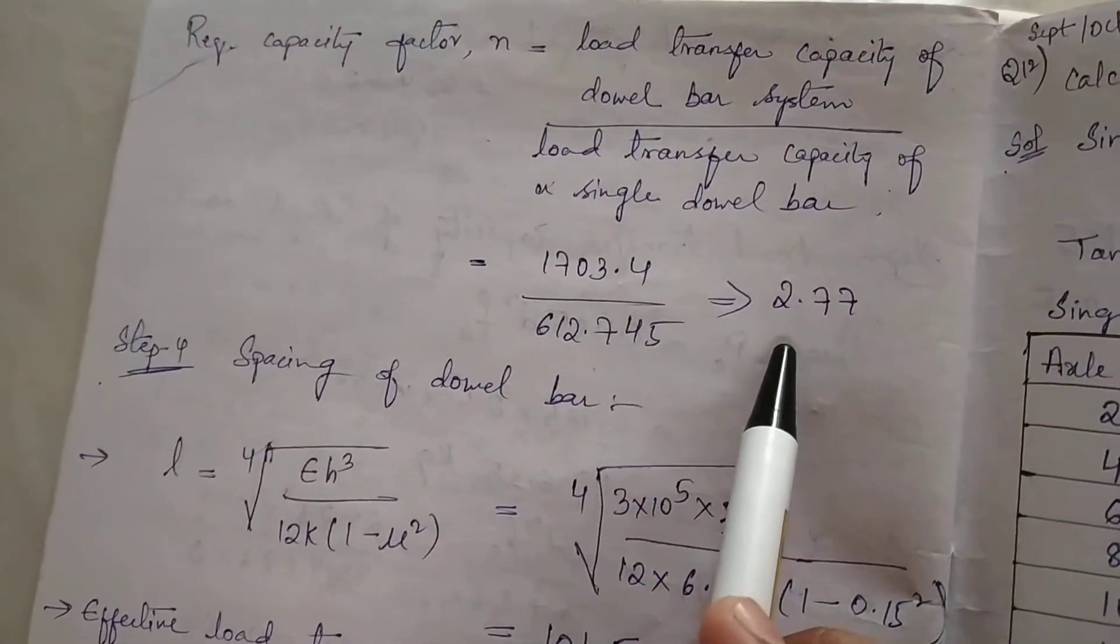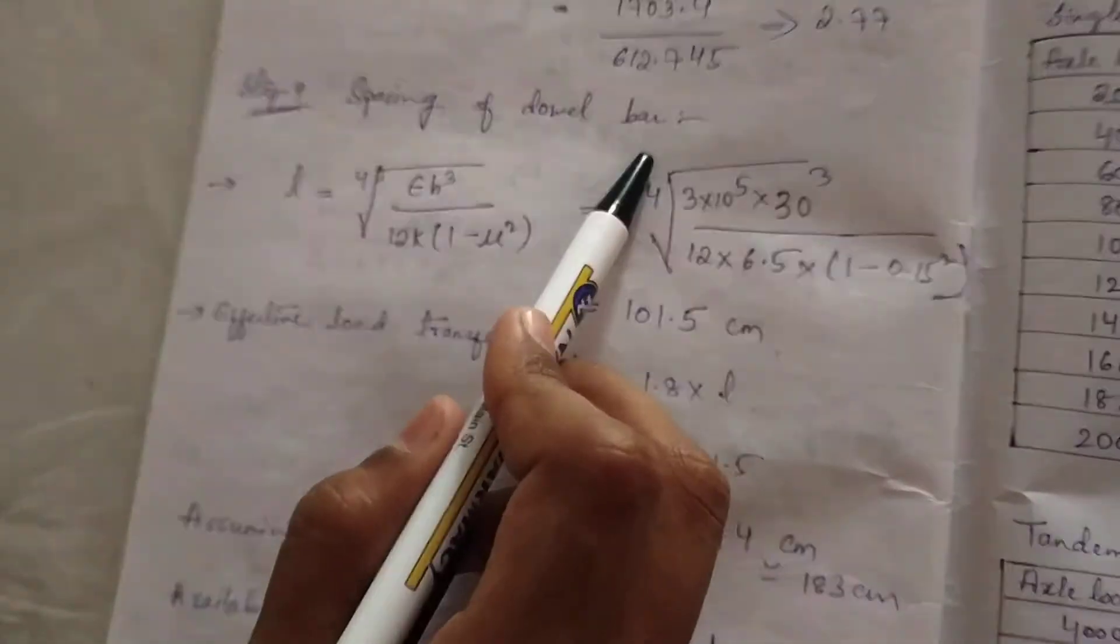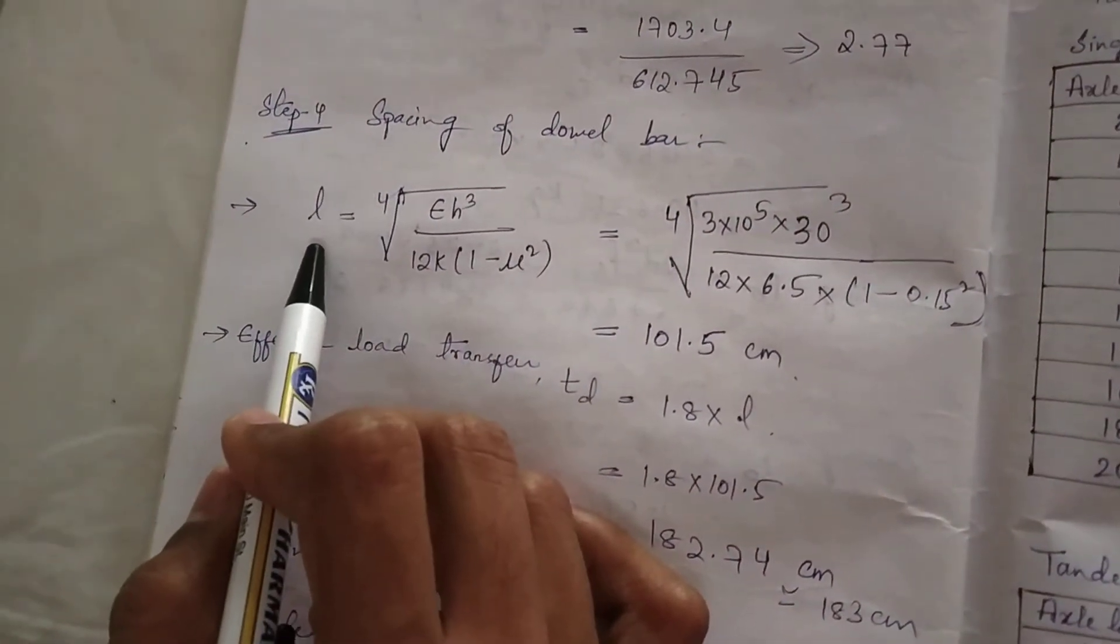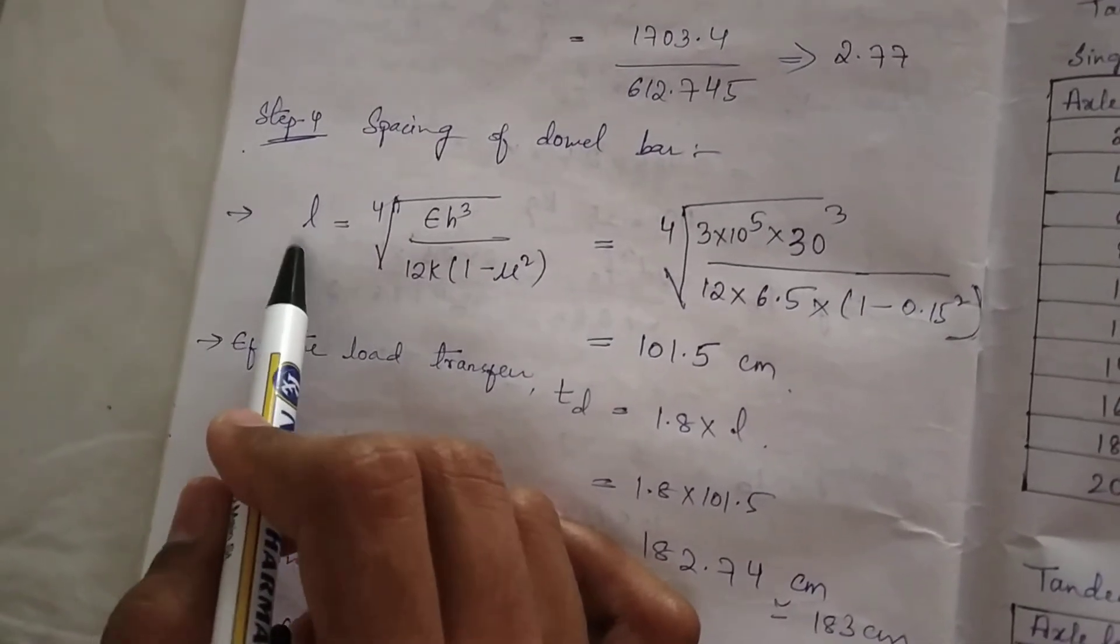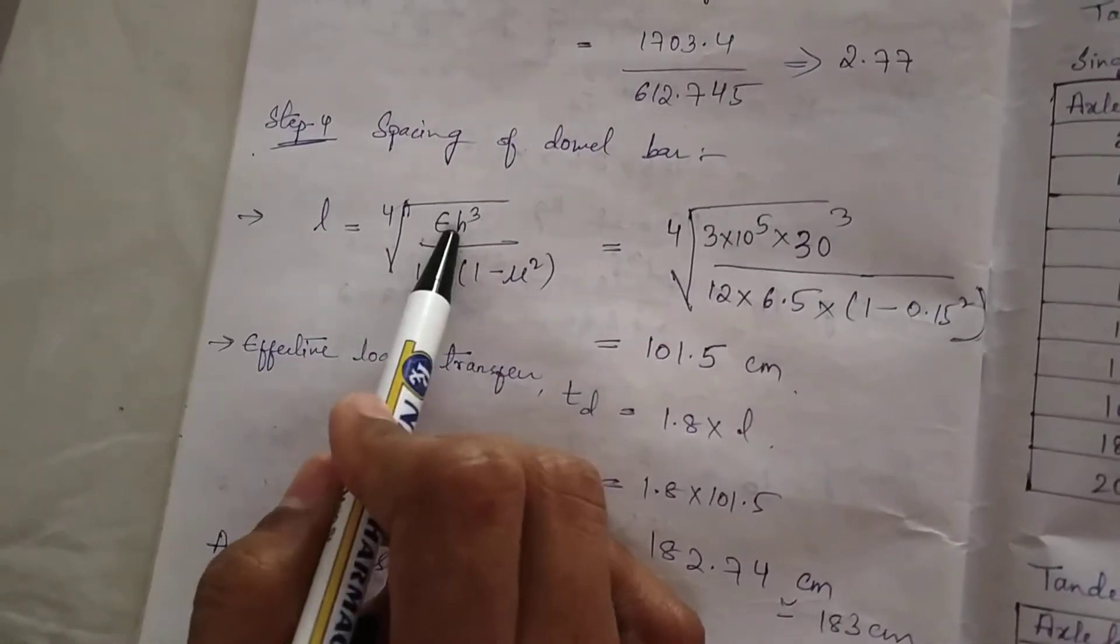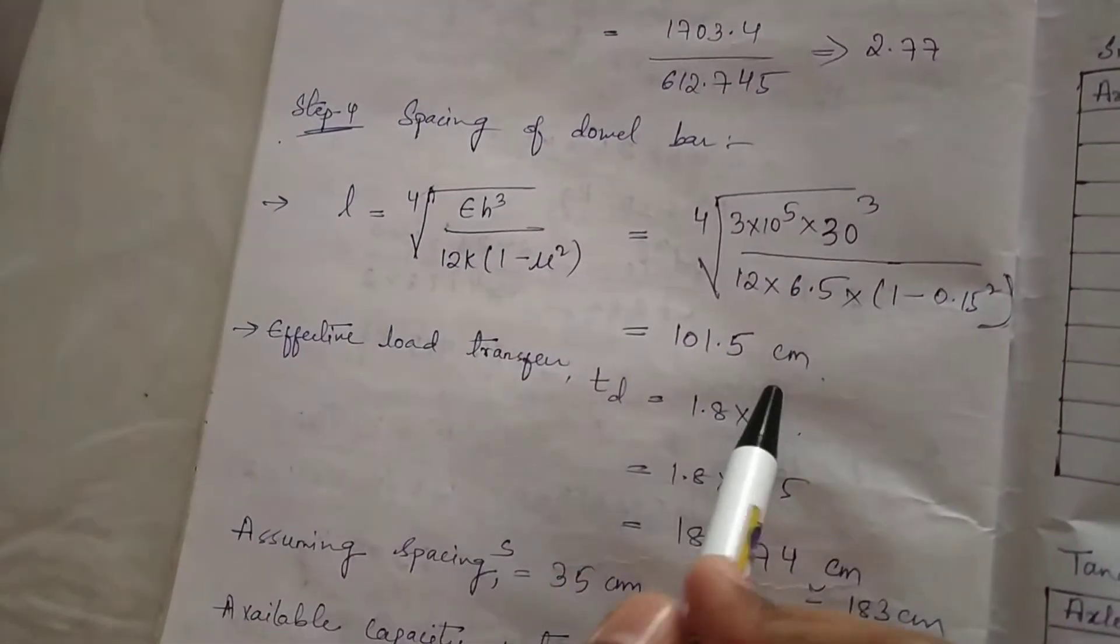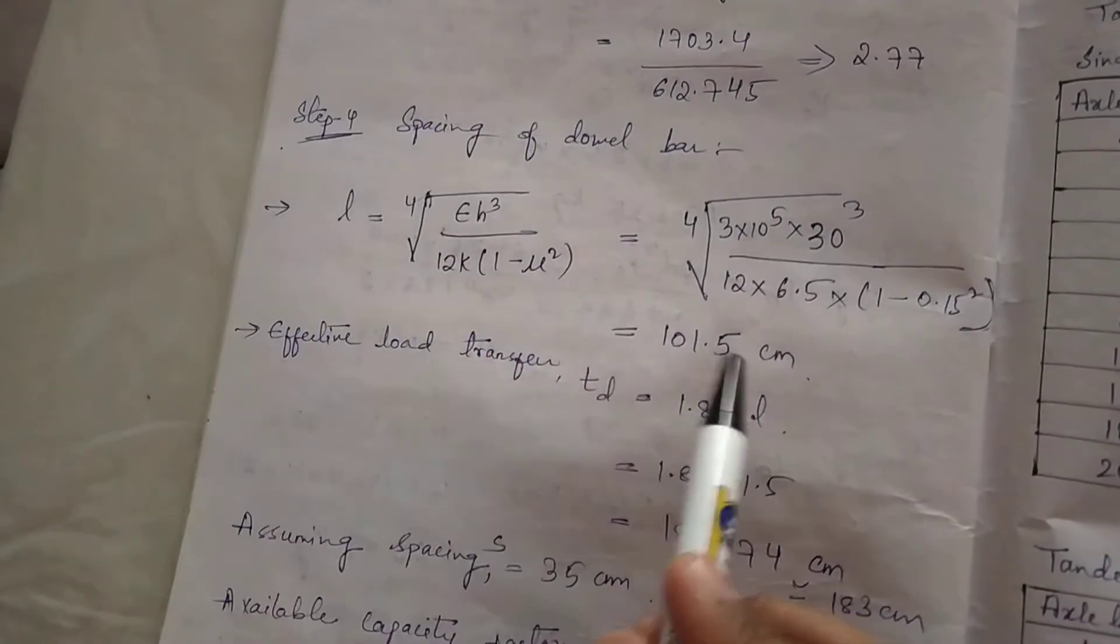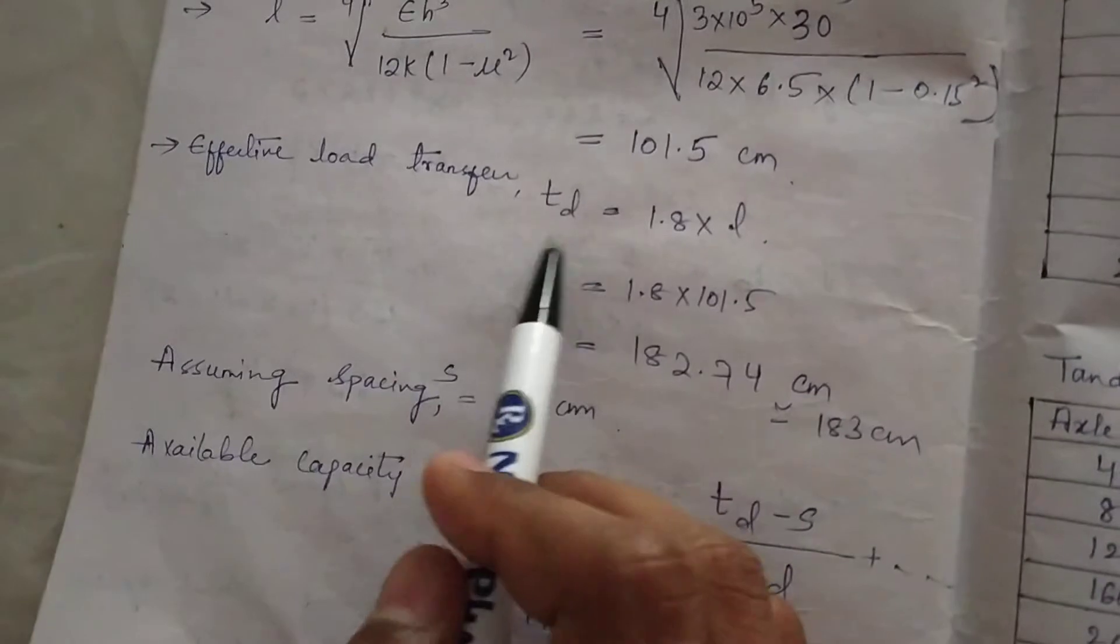Step 4: Spacing of dowel bar. The formula is l = fourth root of [E×h³ / (12K×(1-μ²))]. We will substitute and get length in centimeters.